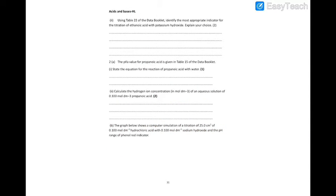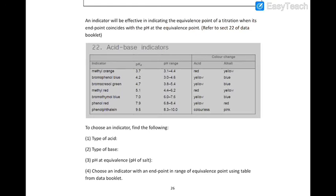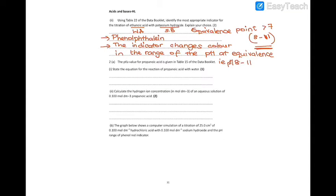Next question: find the appropriate indicator for ethanoic acid and potassium hydroxide. Ethanoic acid is a weak acid; potassium hydroxide is a strong base. For weak acid and strong base, the equivalence point lies at pH greater than 7. Using the indicator table, in the range of 8 to 10 we have phenolphthalein, with pKa 9.6, so phenolphthalein can be used as the indicator here. Give the indicator and the reasoning.